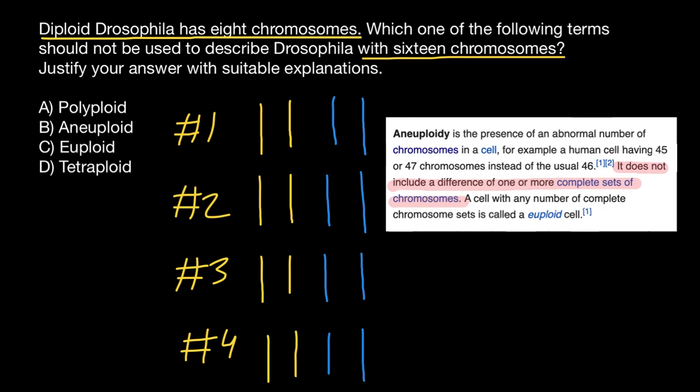So the only definition we cannot apply to a tetraploid organism is aneuploid. It is going to be polyploid, it is going to be euploid, and it is going to be tetraploid. That is all for today — subscribe and see you in the next video. Goodbye!